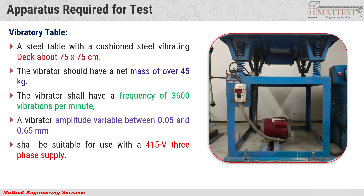Part 3 - Laboratory Test. Apparatus required for the vibration table test. First, the vibration table: a steel table approximately 75 cm by 75 cm. The vibrator has a net mass of over 45 kg. Vibrator frequency is about 3,600 vibrations per minute. Amplitude varies between 0.05 and 0.65 mm.